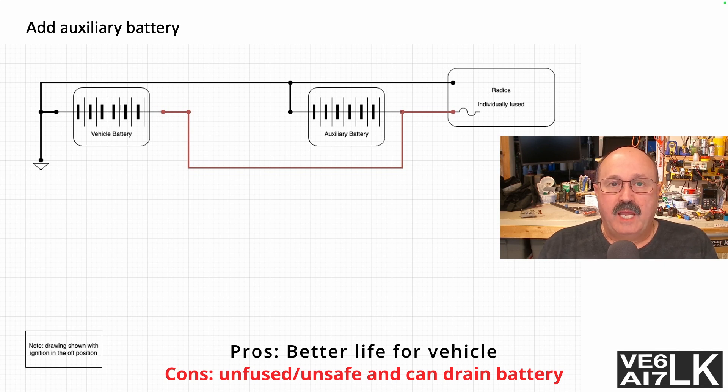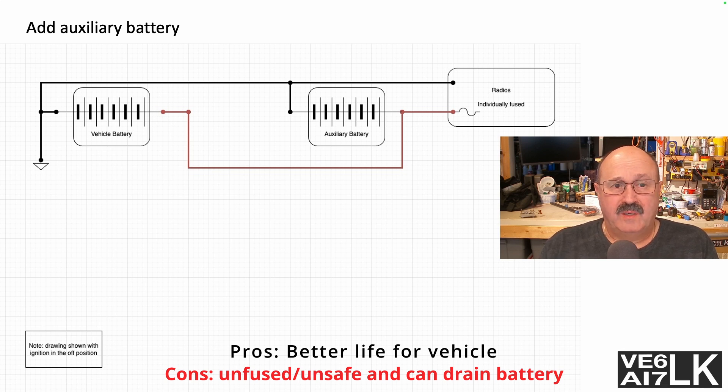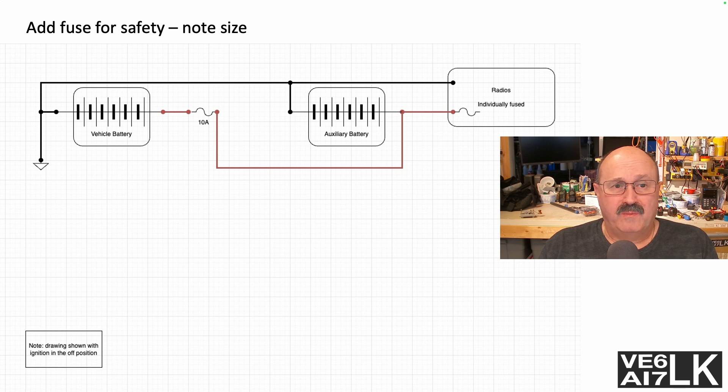So in doing so, I can tap into the existing charging circuit to just charge two batteries instead of one. That's no big deal, right? But it's not very safe till I add a fuse, so now I added a fuse in the circuit leading to the charging of the battery.